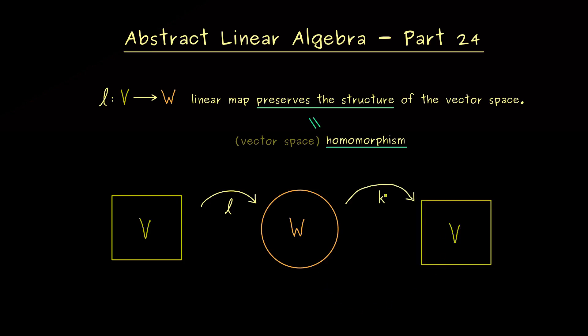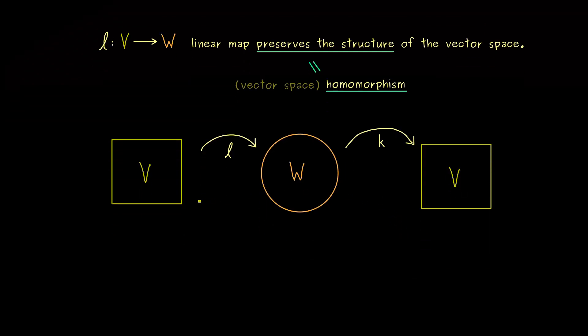And indeed it's definitely possible that the codomain of K is V again. And we have already learned that the composition is again a linear map.